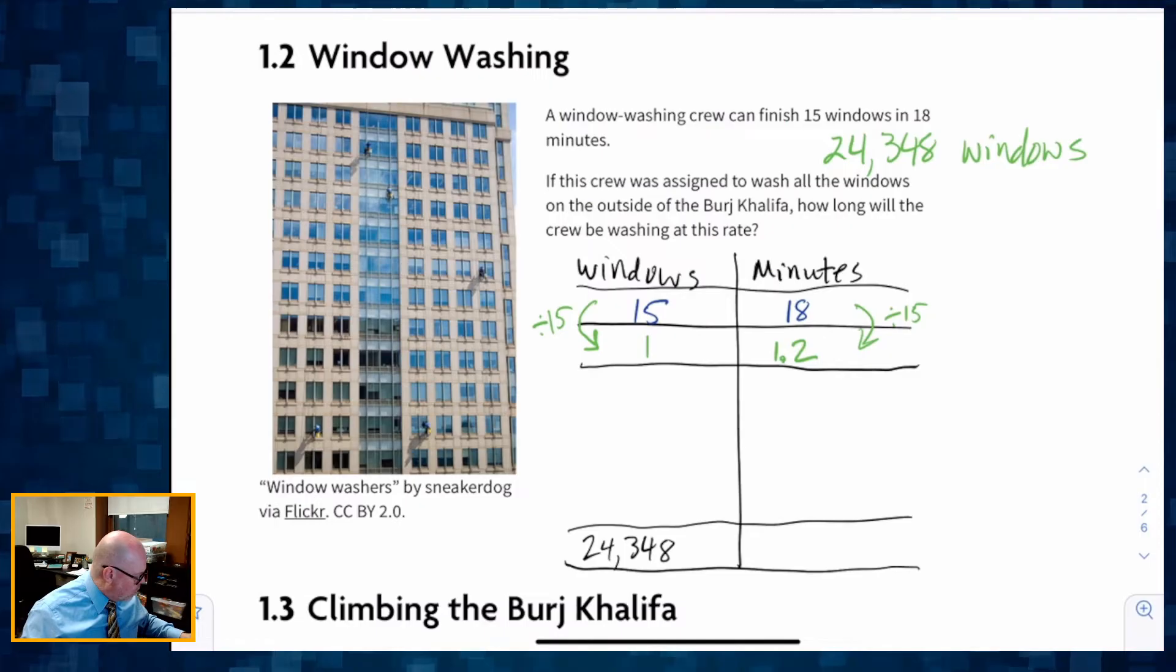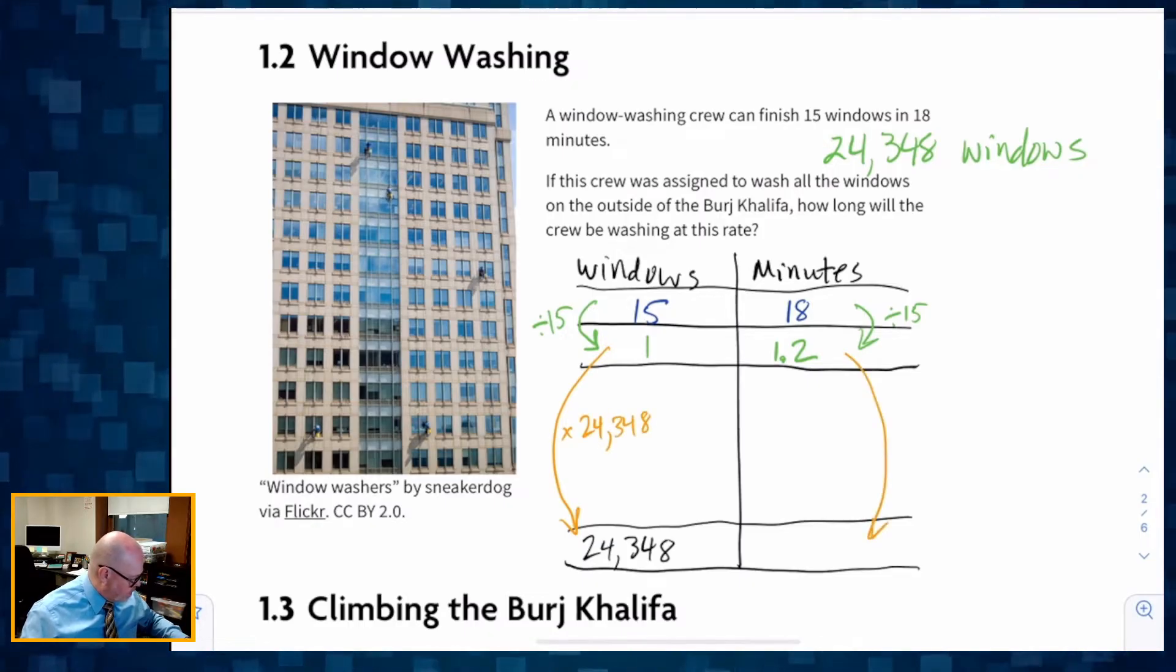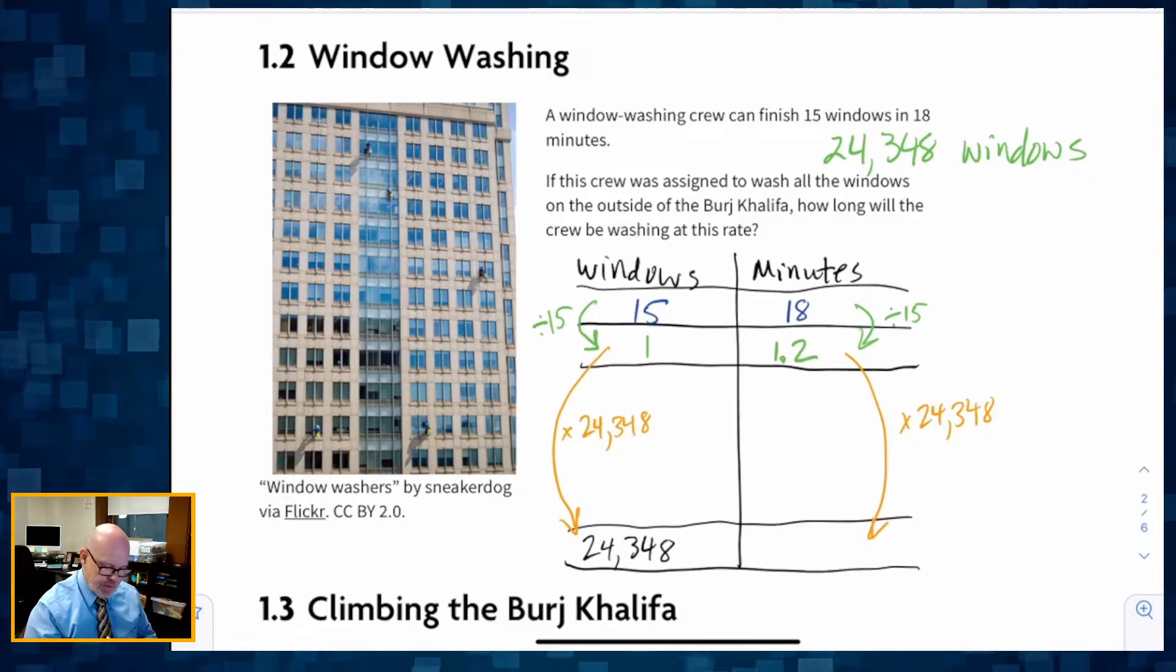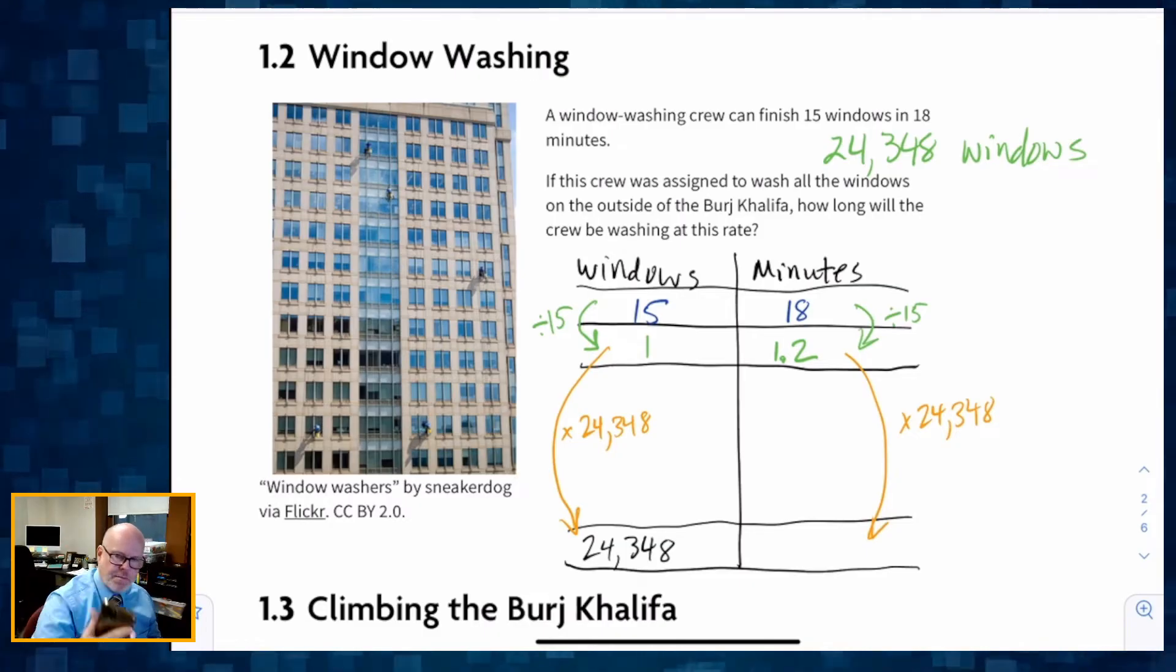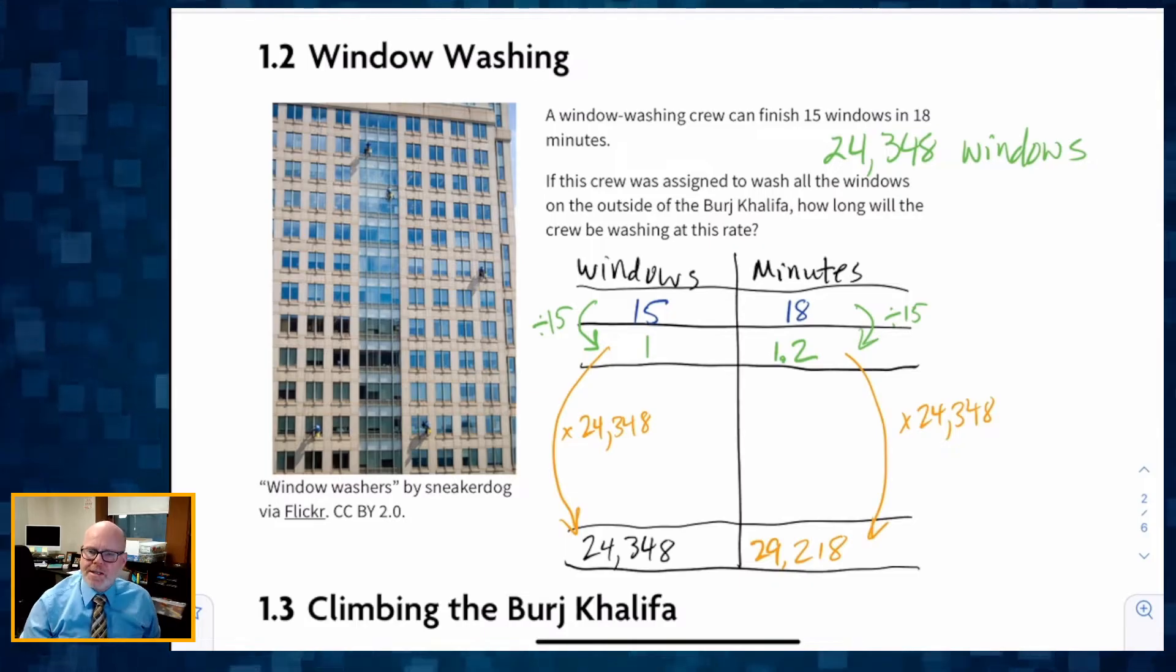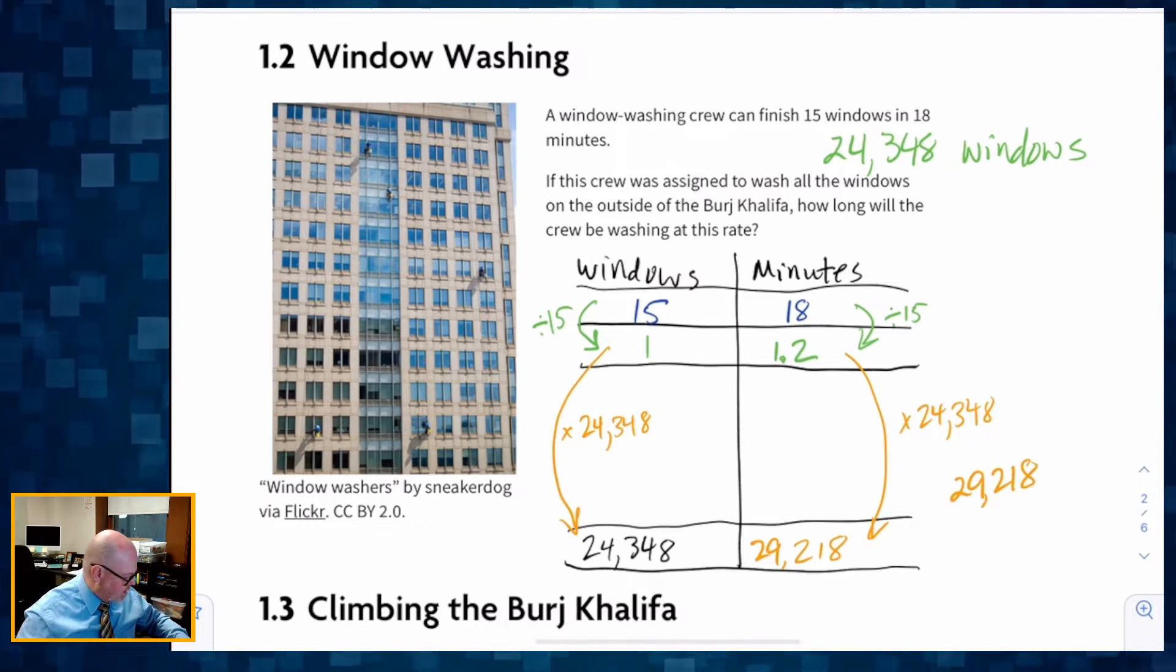It takes 1.2 minutes per window. And then, now that I know one window takes 1.2 minutes, now I could just multiply by 24,348. And I'm going to do the same thing over here, multiply by 24,348. And so that 1.2 times 24,348 gives me some big old huge number. It's 29,217.6.